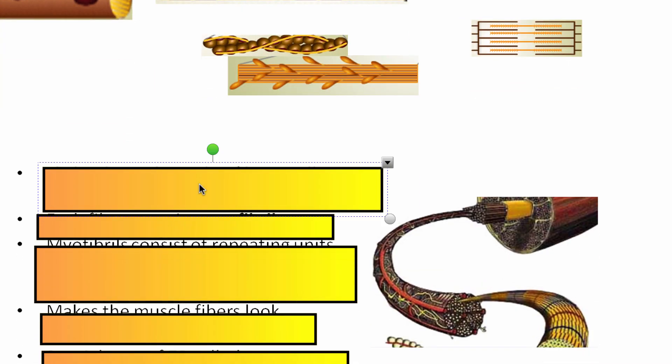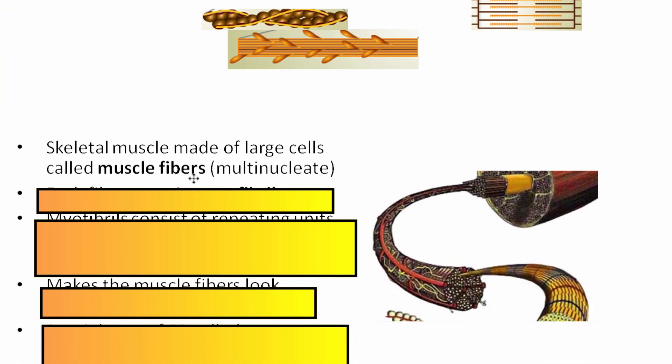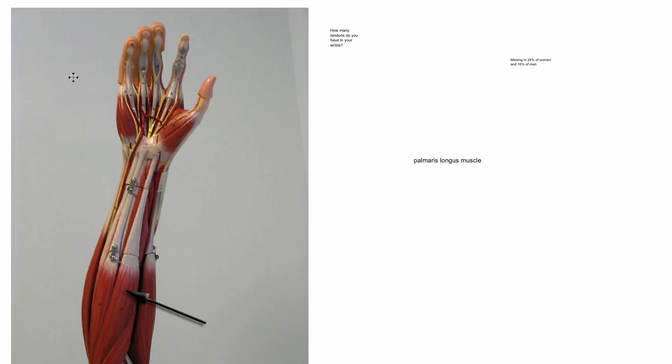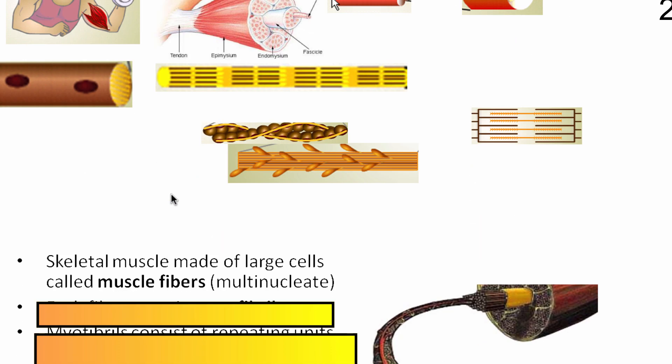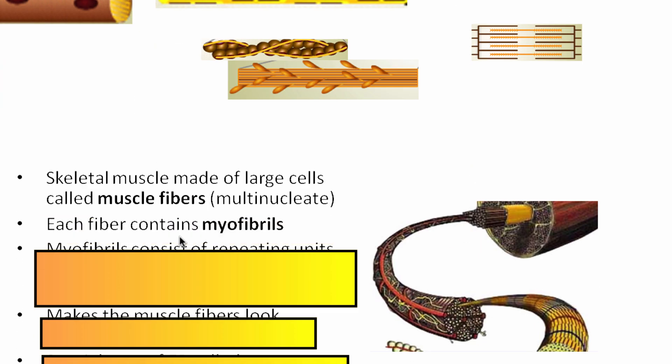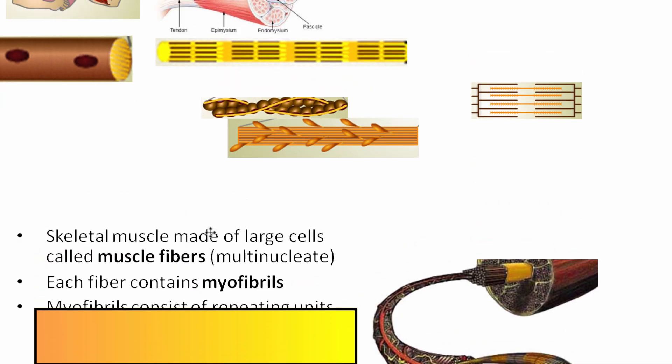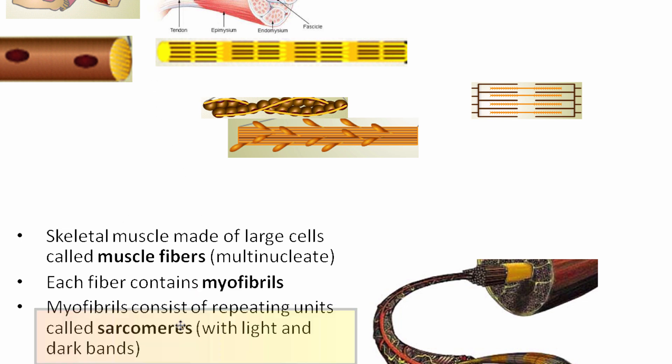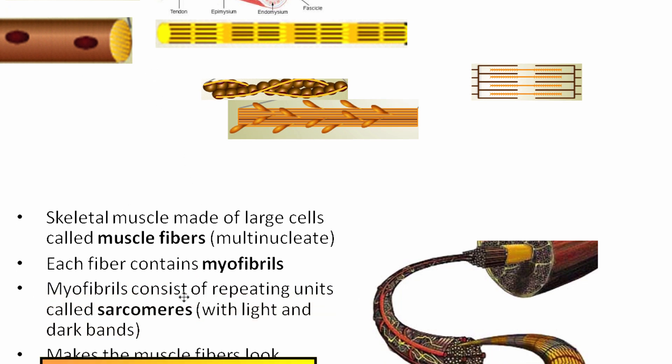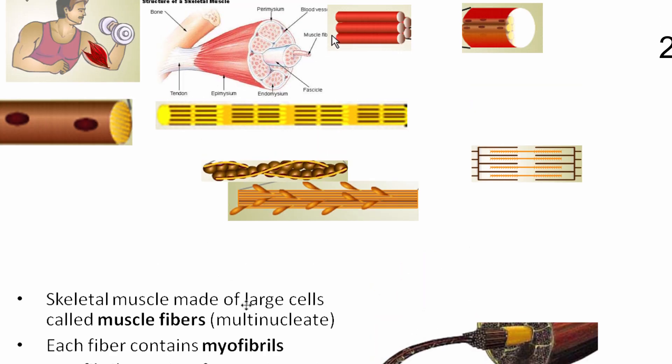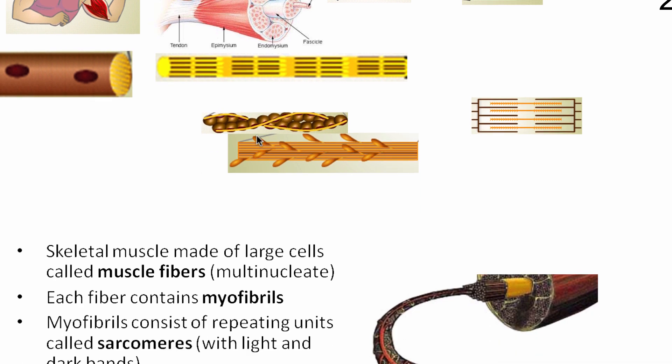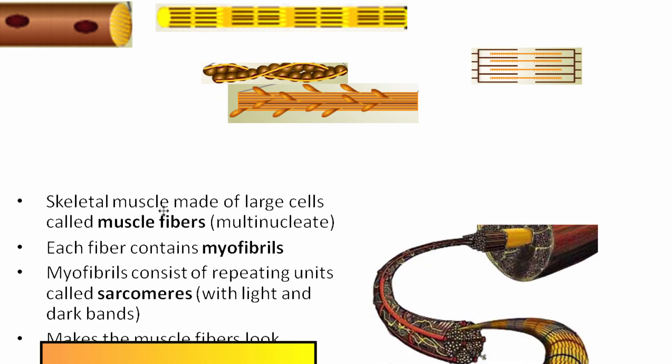So a few things to pay attention to are, what I mentioned before, muscle fibers are multi-nucleate. And each of these fibers contains myofibrils. The myofibrils have these repeating units of light and dark bands, and we're going to see them in a second, but we call them sarcomeres. So some people, you could say that a sarcomere is basically the functional unit.